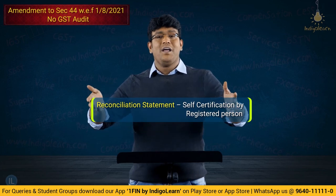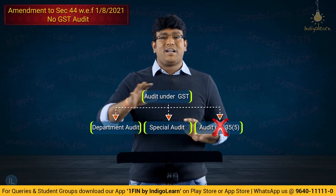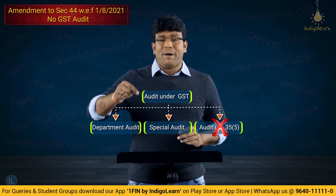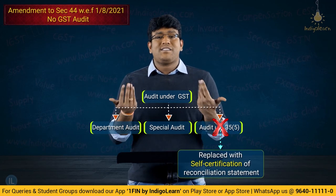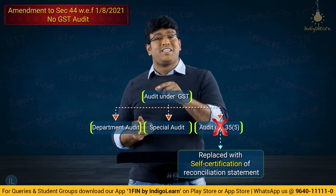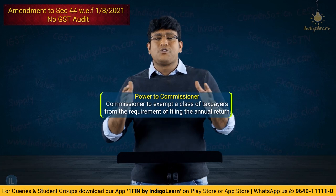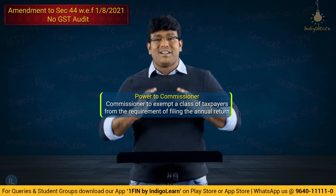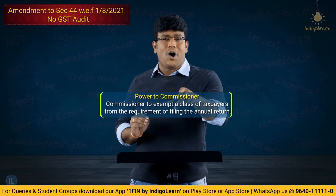Earlier there used to be three types of audit: Department audit, Special audit, and audit under Section 35. But now there is no concept of audit under Section 35 — audit by a practising chartered accountant or cost accountant has been removed; it is only on a self-certification basis. Additionally, the Commissioner is given power to exempt any certain class of persons from furnishing of annual return. These amendments are effective from 1st August 2021.